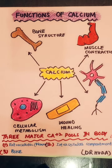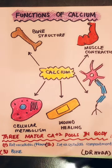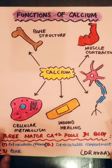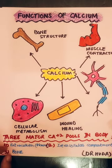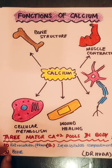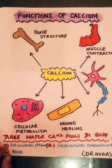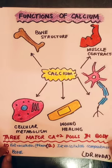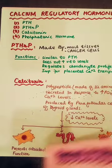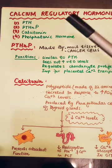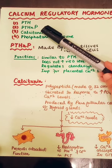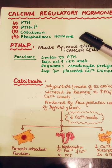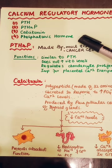Calcium modulation and calcium regulatory enzymes are most important. The key calcium regulatory hormones include parathyroid hormone, parathyroid hormone-releasing peptide, calcitonin, and phosphate-related hormone. These are very important and we will study each one in detail.